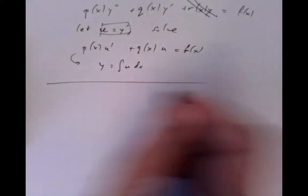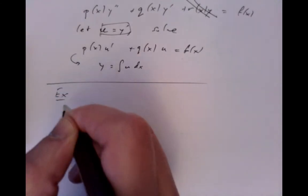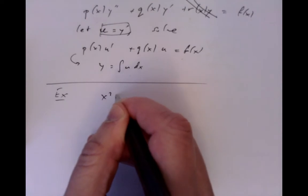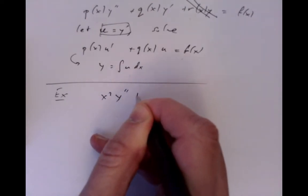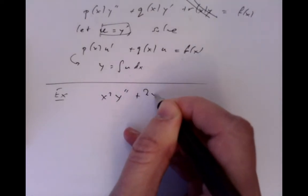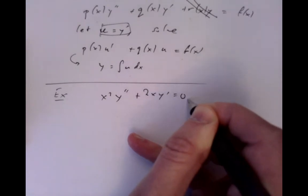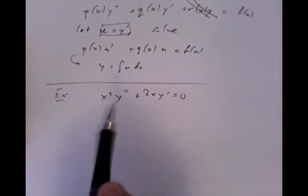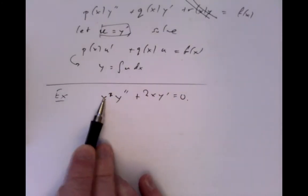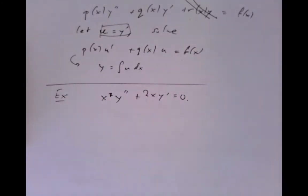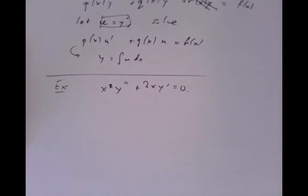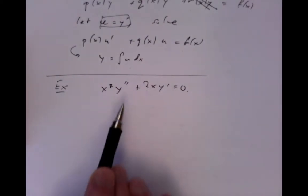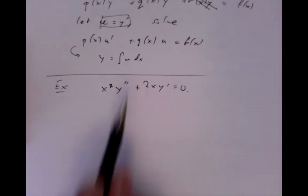Let's see it in an example. So we want to solve an equation which looks like x squared y double prime plus 2x y prime equals 0. Now in this situation, we have non-constant coefficients — x squared and 2x are not constants — so we can't use our old techniques for constant coefficient equations and the auxiliary equation.